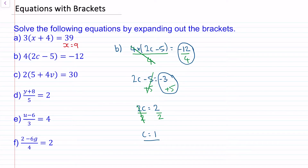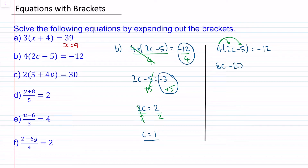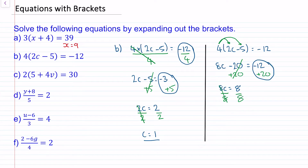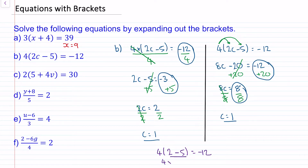We'll also try this question by expanding brackets. So we have 4 times 2c which is 8c, and then 4 times negative 5 which is minus 20, and this is equal to minus 12. Now we'll add 20 to both sides — these cancel to make 0. So 8c equals negative 12 add 20, which is 8. Divide both sides by 8 — these cancel to make 1, so c is equal to 8 divided by 8, which is 1. We check by substituting back in: 4 lots of 2 times 1 which is 2, minus 5 to make negative 12. Well 2 take away 5 is negative 3, and 4 times negative 3 does make negative 12. So we know the answer is c equals 1.